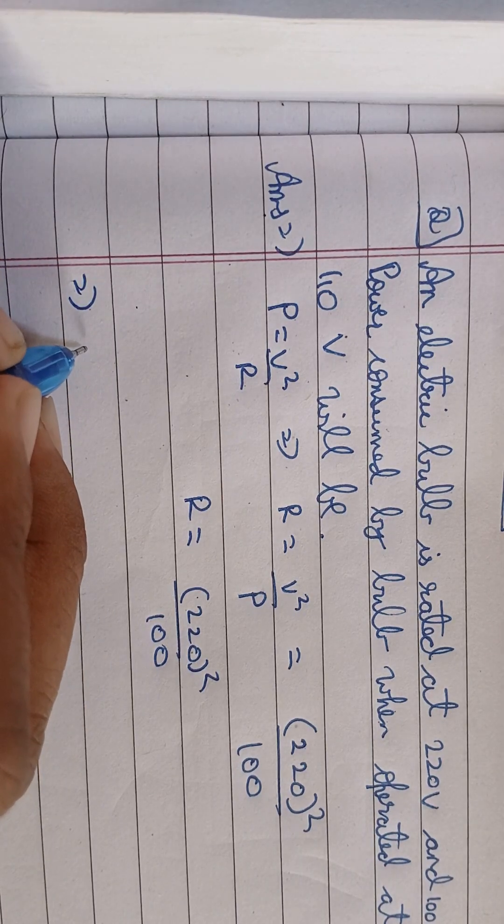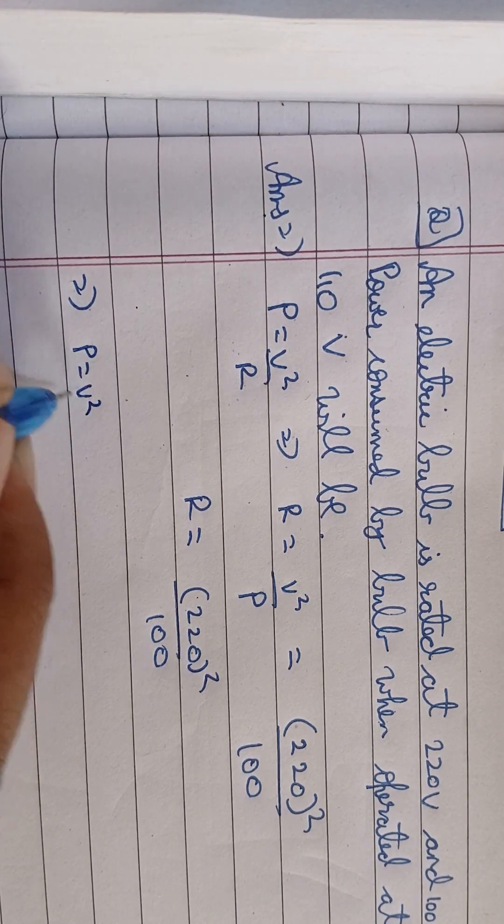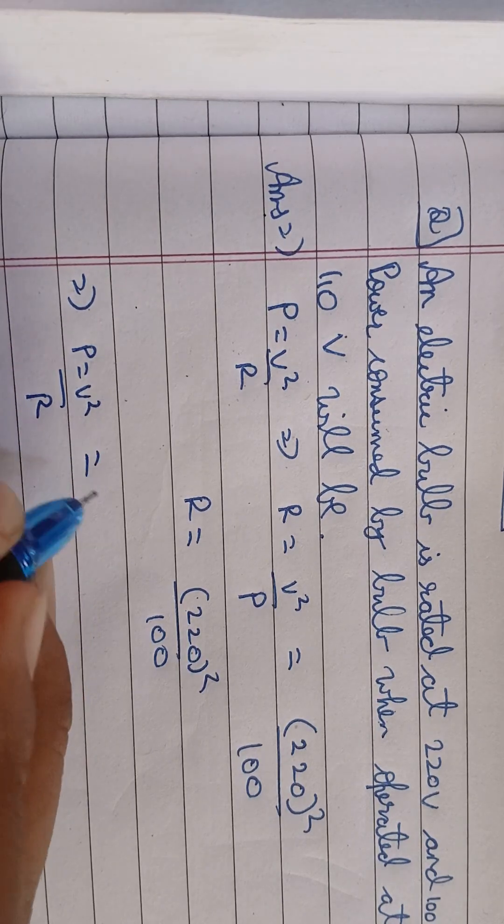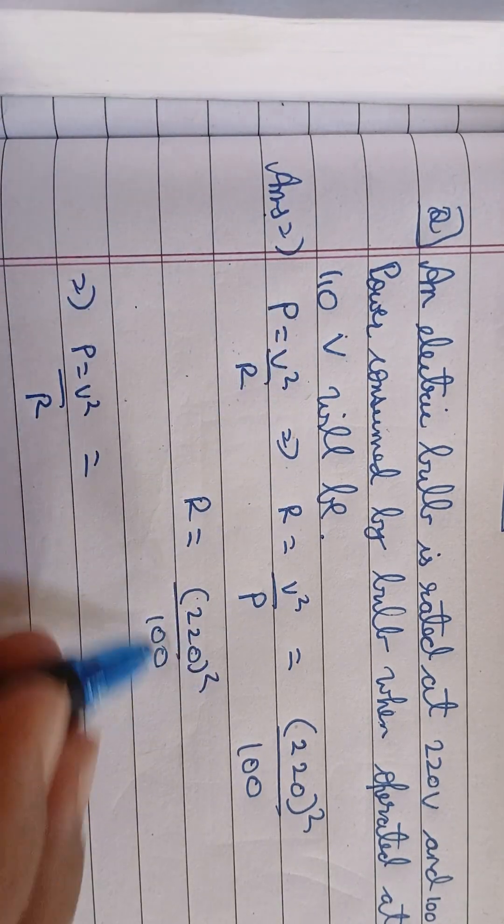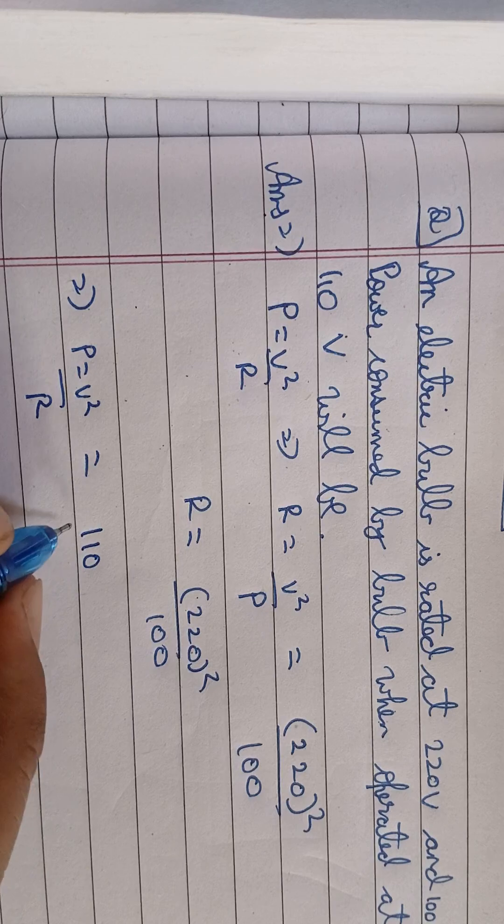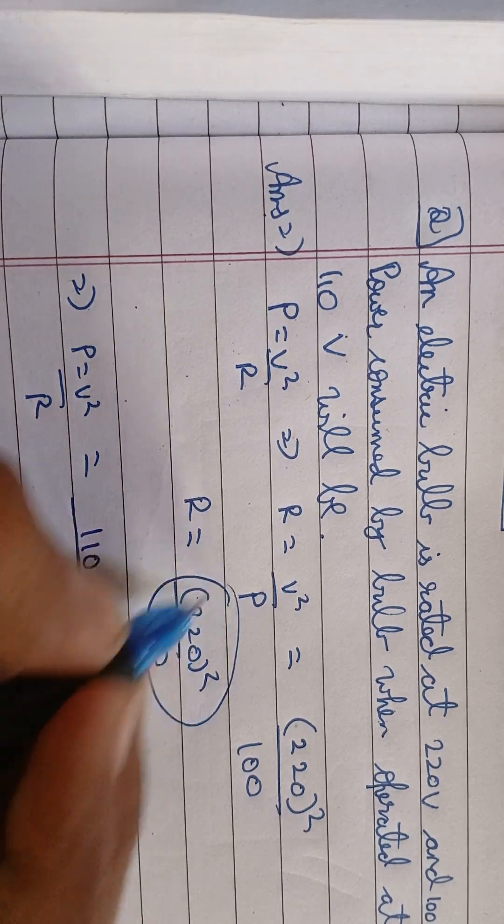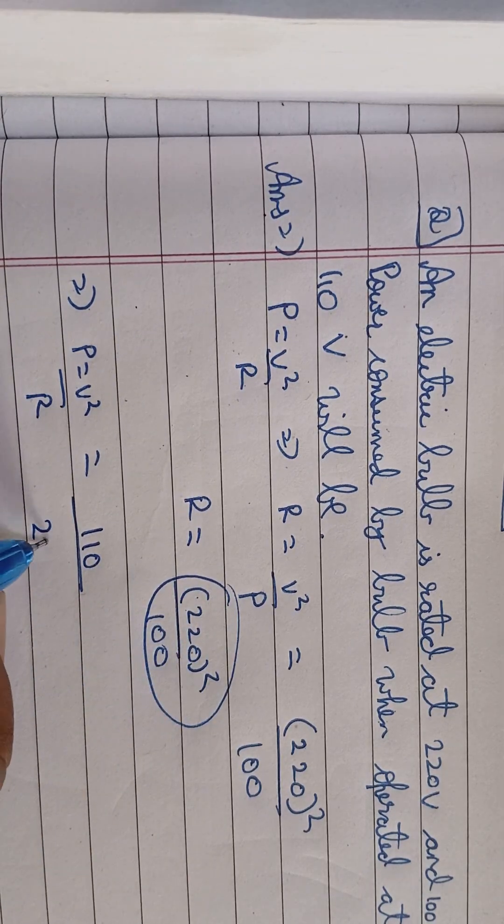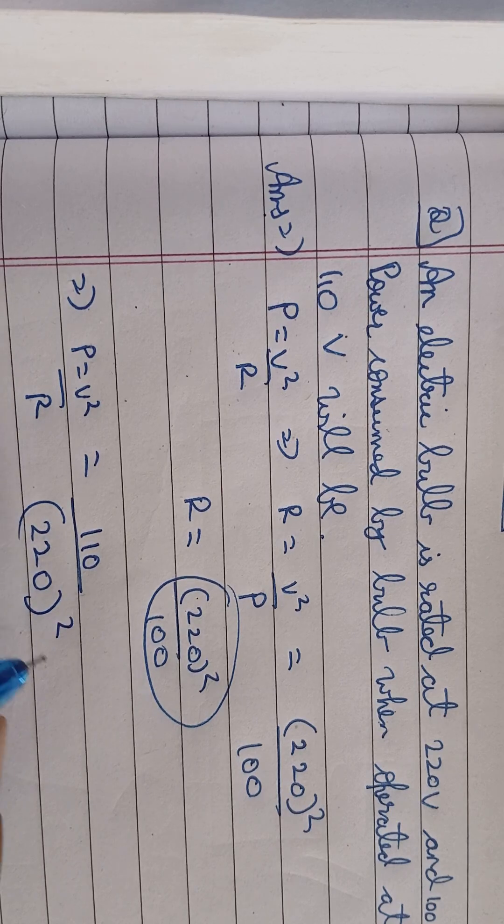Now we are again using the same formula, P is equal to V square by R. V is 110 volt and R is 220 square divided by 100.